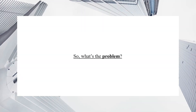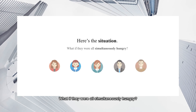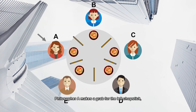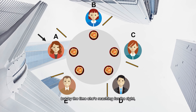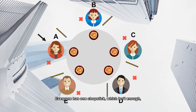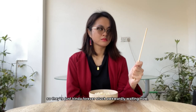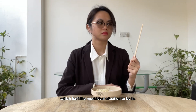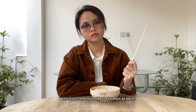What's the problem? Here's a situation. What if they were all simultaneously hungry? Philosopher A makes a grab for the left chopstick. But by the time he's reaching for the right, everyone's already done the same thing. Do you see the situation here? Everyone has one chopstick, which isn't enough. So they're just kinda forever stuck awkwardly waiting now.